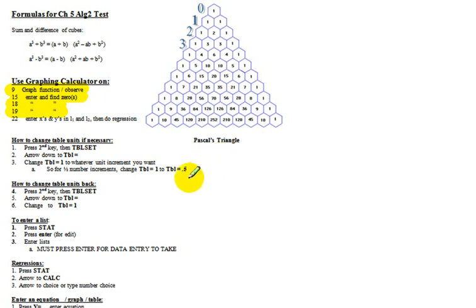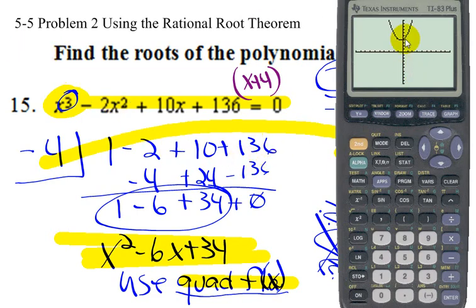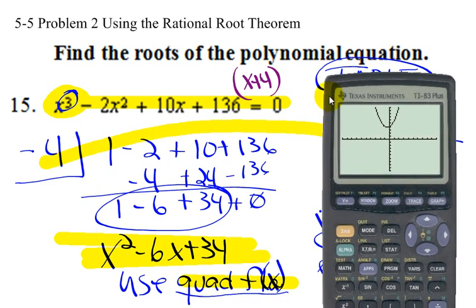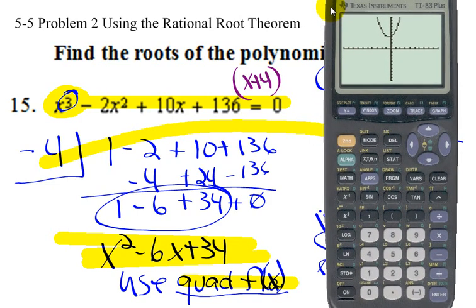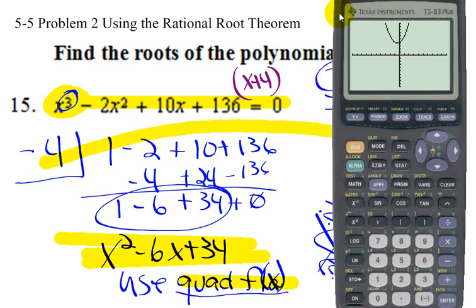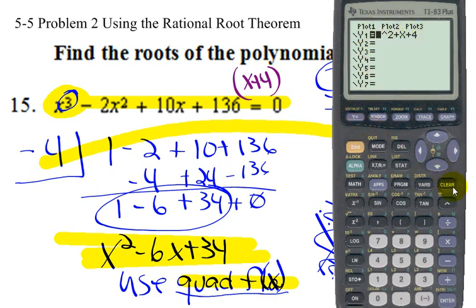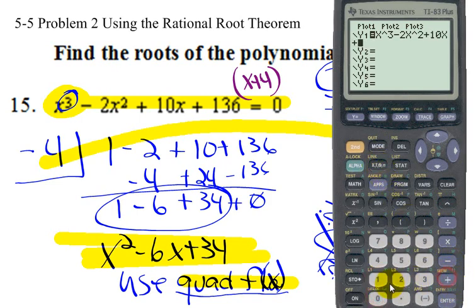Here's number 15. It says find the roots of the polynomial equation: x³ − 2x² + 10x + 136 = 0. We're going to enter this into Y=, so clear out what's there from the last equation, then type in x³ − 2x² + 10x + 136.